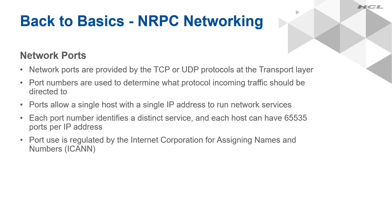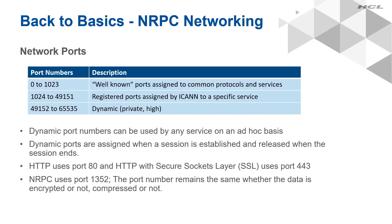Network ports are provided by the TCP or UDP protocols at the transport layer. Port numbers are used to determine what protocol incoming traffic should be directed to. Ports essentially allow a single host with a single IP address to run network services. Each port number identifies a distinct service, and each host can have 65,536 ports per IP address. Port use is regulated by the Internet Corporation for Assigning Names and Numbers. ICANN provides three categories for ports: Category 1 for ports 0 to 1,023 are well-known ports assigned to common protocols and services; Category 2 for ports 1,024 to 49,151 are registered ports assigned by ICANN to a specific service; and Category 3 for ports 49,152 to 65,535 are dynamic private high ports, used by any service on an ad-hoc basis, assigned when a session is established and released when the session ends.